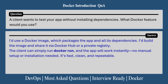Next interview question: a client wants to test your app without installing dependencies. What Docker feature would you use? Here's how you can answer: I would use a Docker image, which packages the app and all its dependencies. I would build the image and share it via Docker Hub or a private registry. The client can simply run a Docker run command and the app will work instantly — no manual setup or installation needed. It's fast, clean and repeatable.